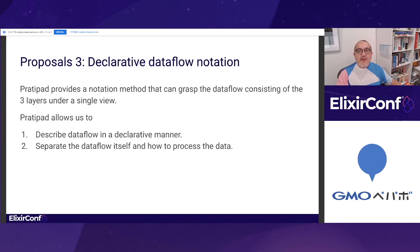The third proposal is a declarative and easy-to-grasp data flow notation. Using Platypad, we can describe data flow in a single file in a declarative manner. It helps us to grasp the data flow in the IoT system at a glance. Moreover, Platypad allows us to separate the data flow itself and how to process data on it, helping us to keep our code base tiny.